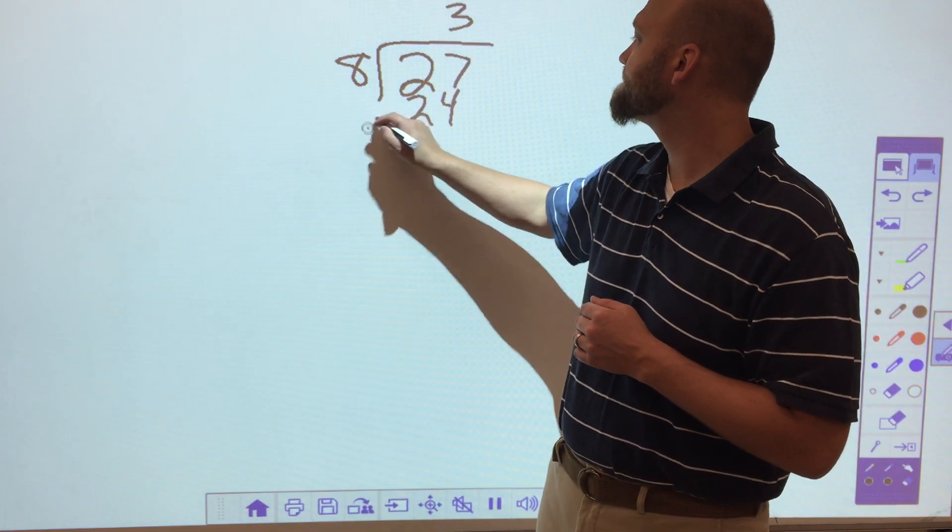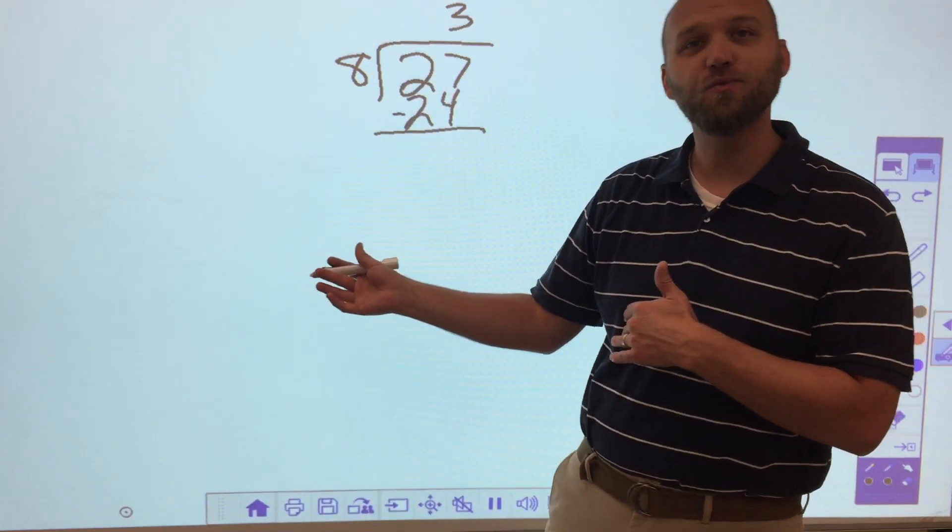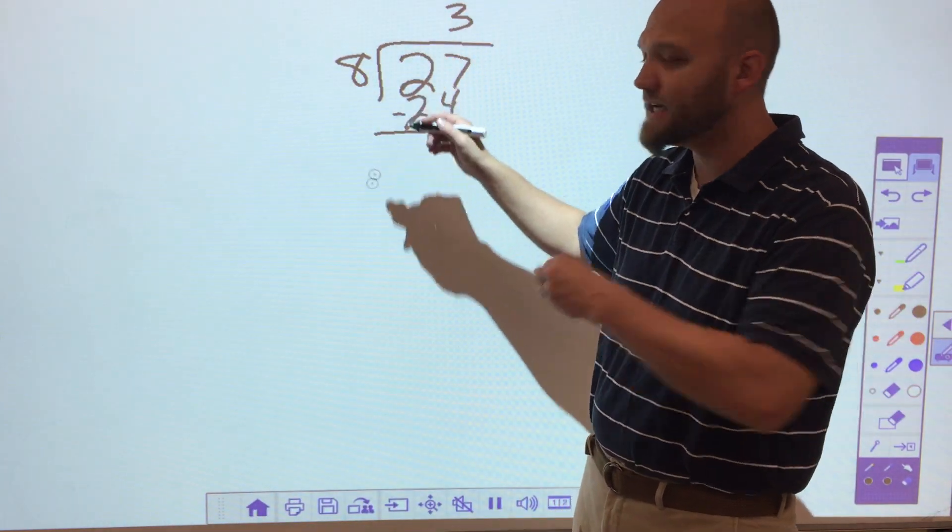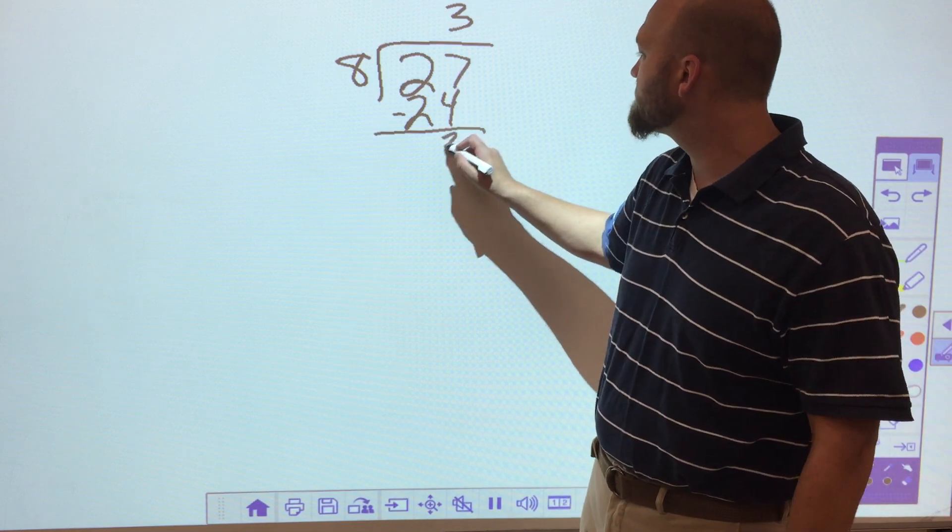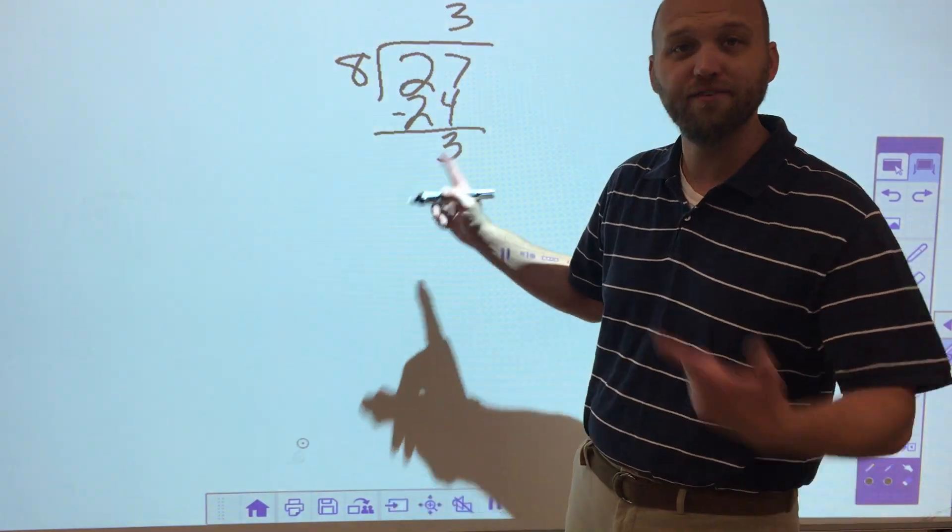...is 24. I bring down my 24 and I show that I took 8 three times. So I take those 24 away. And when I subtract, I'm left with 3, obviously less than 8.